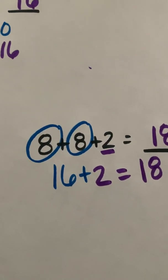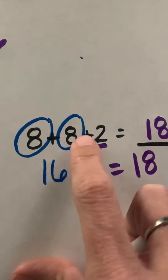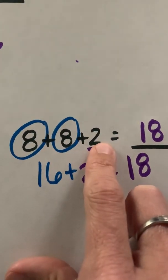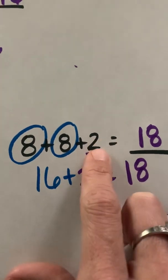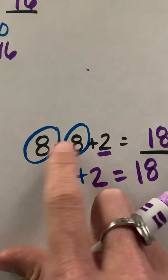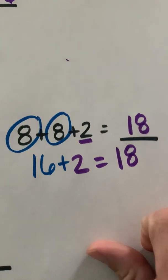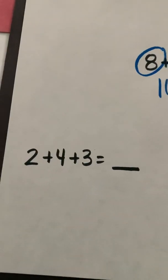Now some of you may have thought, yes I see the doubles but I also see a 10, and that's fine too. If you wanted to add 8 plus 2 and get 10 first, and then add 10 plus 8, that's certainly something that you could do. But I also saw my doubles here. So either way you still get the same sum. So now let's look at this one.